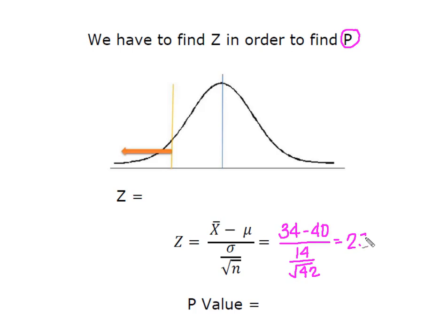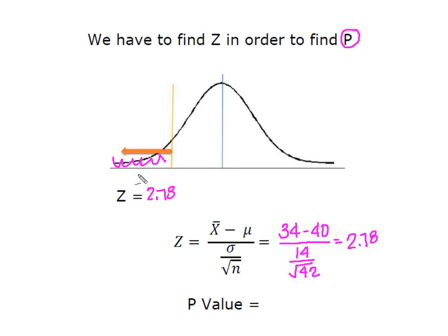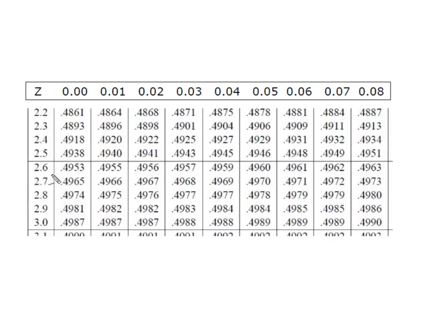So now we have a z here of 2.78. And so my P-value is this area beyond my z of 2.78. So I'm going to look 2.78 up in my normal distribution table. We're going to pick up our 2.7 right here. I'm going to go over our column of 0.8 where those two intersect. I'm going to have 0.4973.